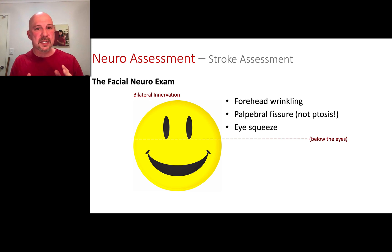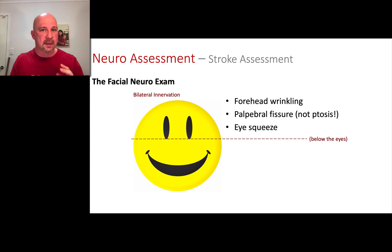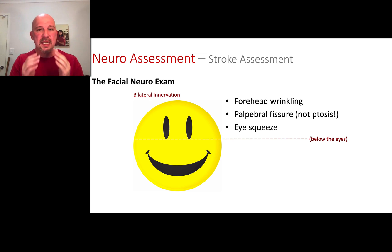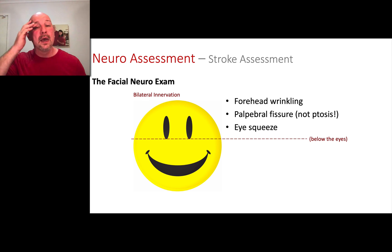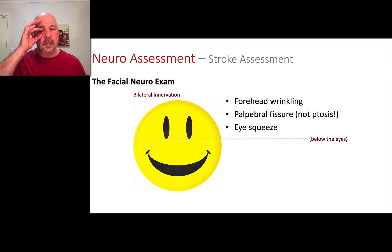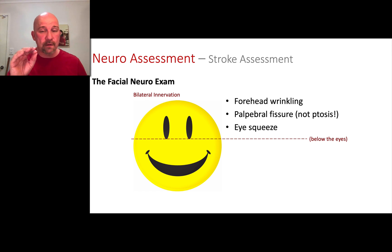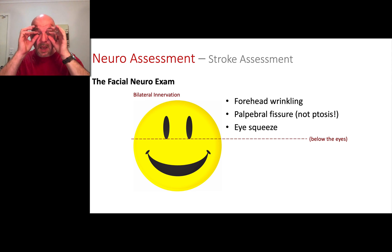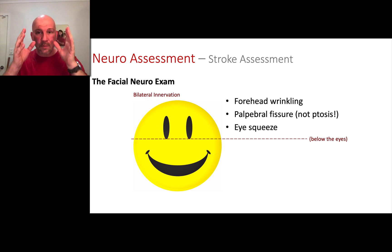Very often when people teach stroke assessment, they tell you to look for ptosis — the P is silent. Ptosis is actually something different than the PF. Ptosis is when you have a droopy eye: the upper eyelid will droop and the lower eyelid will droop, and it doesn't necessarily open the PF the same way. What you're looking for is to make sure the amount of eyeball showing is the same on both sides — not abnormally large or small.